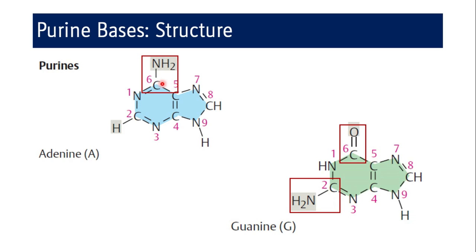The end product of purine base catabolism is uric acid. Uric acid has the same ring structure, and its chemical name is 2,6,8-trioxypurine. At physiological pH, all purines and pyrimidines exist in the lactam or keto form, as the keto group is more stable compared to the enol group.